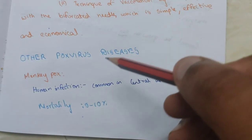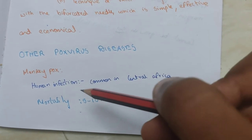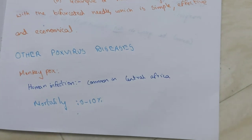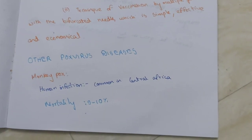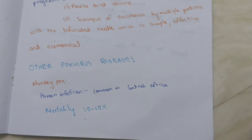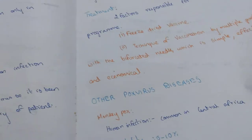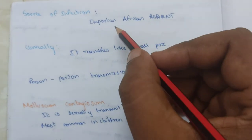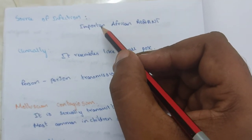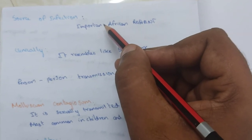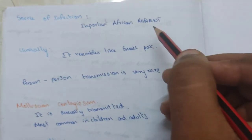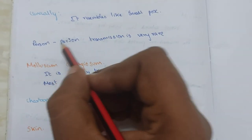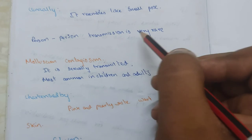Monkeypox virus infects humans and is common in central Africa, with a mortality rate of 5 to 10%. The source of infection is African rodents. Clinically it resembles smallpox, but person-to-person transmission is very rare.